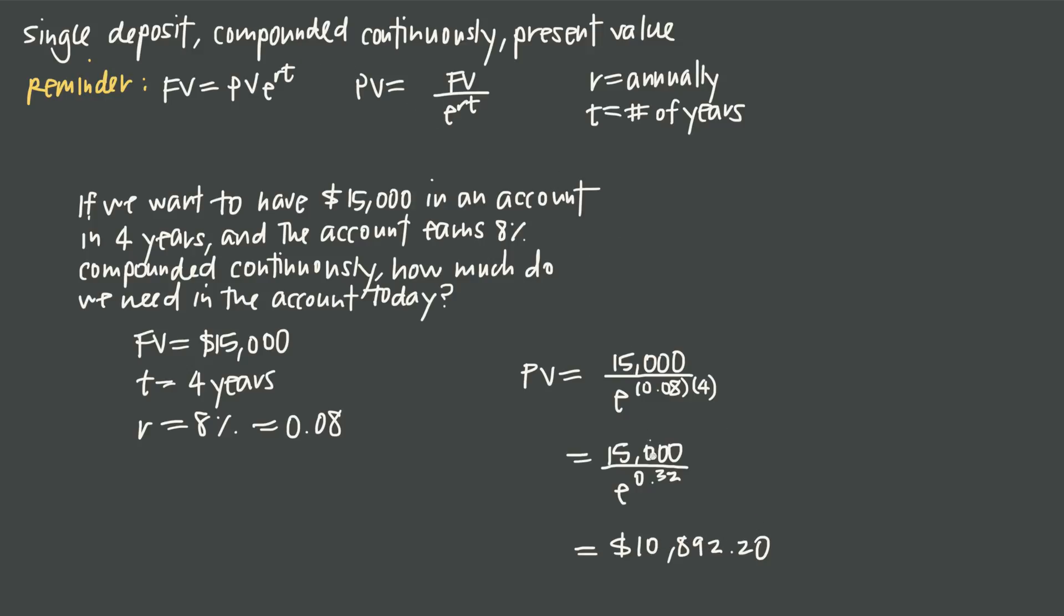And just to prove what we were talking about earlier, remember you could still plug this into the future value formula if you don't want to remember the present value formula. We would just take 15,000 equals present value times e to the 0.08 times 4, which gives us 15,000 equals present value times e to the 0.32.